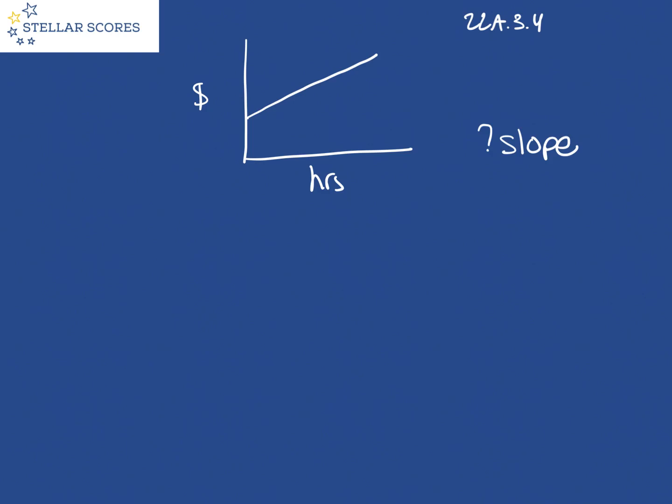All right, this gives us this graph. The graph represents the total charges in dollars by a contractor for X hours of work a week. The contractor charges a one-time fee plus an hourly rate. What is the best interpretation of the slope of the graph?